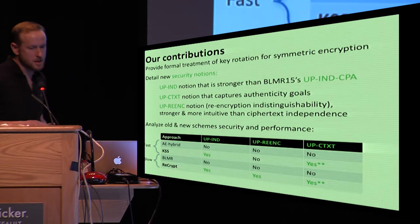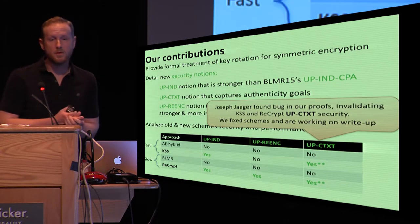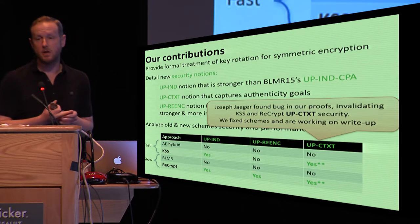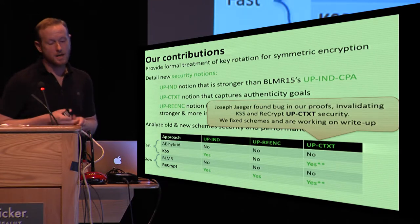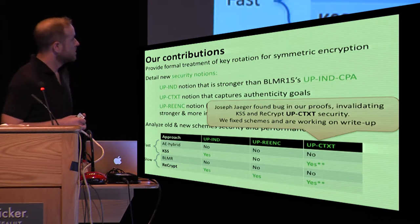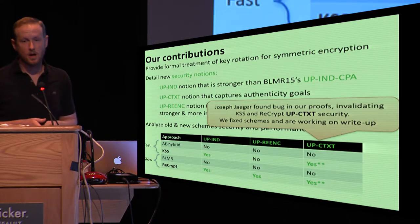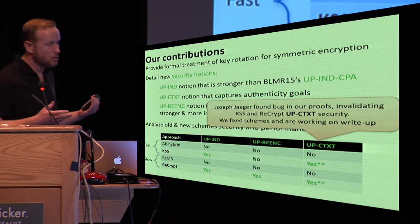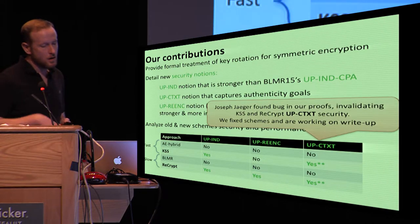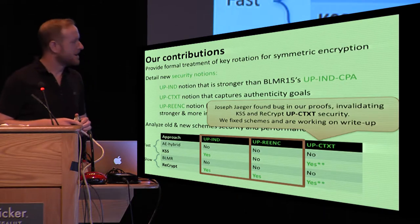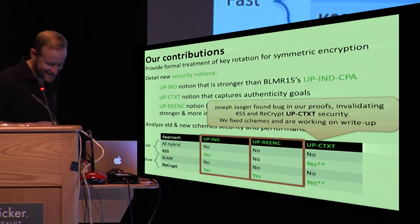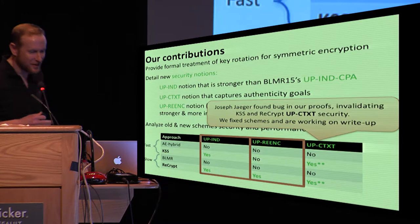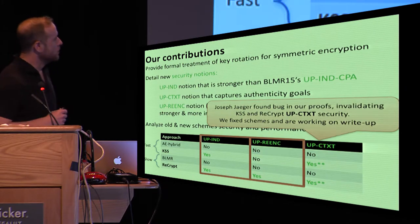Now, sort of embarrassingly, just last week, Joseph Yeager found a bug in some of our proofs for up ciphertext, and this actually invalidates the security of the schemes for KSS re-encrypt in the context of ciphertext as given in the camera ready. So that's kind of a bummer, but Joseph was very nice to point this out to us. We have fixes for the schemes and are working on a write-up. Qualitatively, it shouldn't change the result takeaways from the paper, but we'll be putting that up on ePrint very shortly. For that reason, I'll be focusing just on the CPA kind of portions of our work. And also because I didn't have time. That's the real reason. Okay, so we'll go through these each in turn.